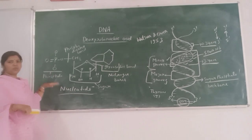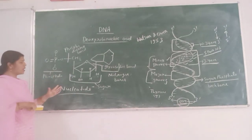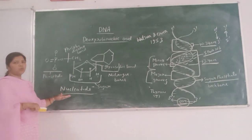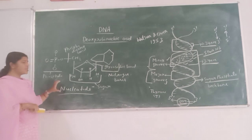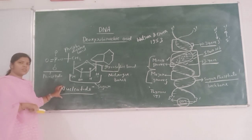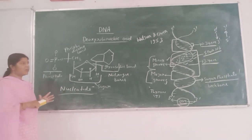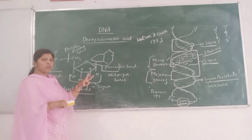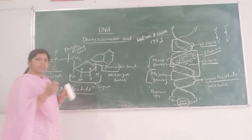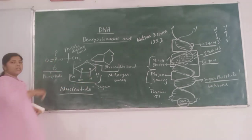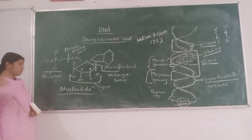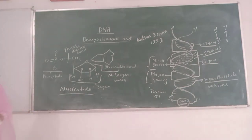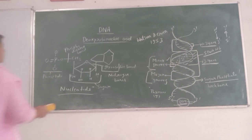Sugar and phosphates are combined with a phosphodiester bond, and sugar and nitrogenous bases are joined together by a glycosidic bond. This is the structure of one nucleotide, the monomer of polynucleotides. Several nucleotides joined together form a polynucleotide chain, and two polynucleotide chains held together form the DNA structure. Thank you.